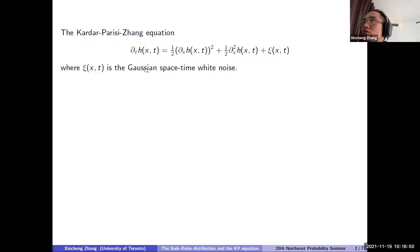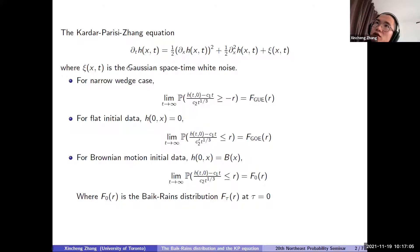One is that you can see non-trivial fluctuation at t to the one-third large timescale. And the second is that with different initial conditions, you will see different large-time behavior. So for the KPZ equation, for narrow wedge case, if you center your function and take the t to the one-third scale, and you look at x equal to zero, as t goes to infinity, you will see the F-GUE distribution. And for the flat initial data, you'll take the same scaling and the large-time limits, you will see the GUE distribution.